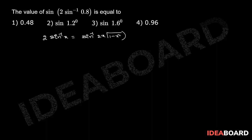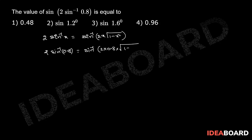So 2 into sin inverse of 0.8 equals sin inverse of 2 into 0.8 into square root of 1 minus 0.64. That equals sin inverse of 2 into 0.8 into 0.6.